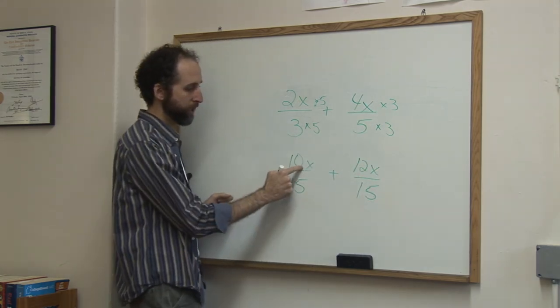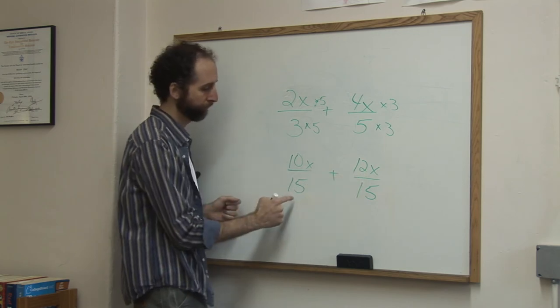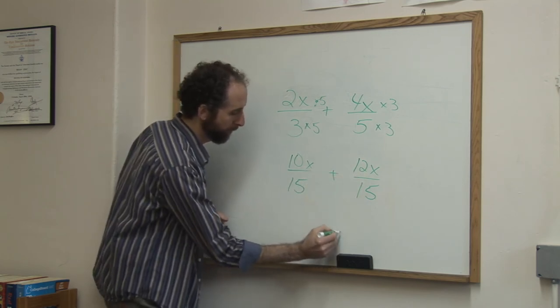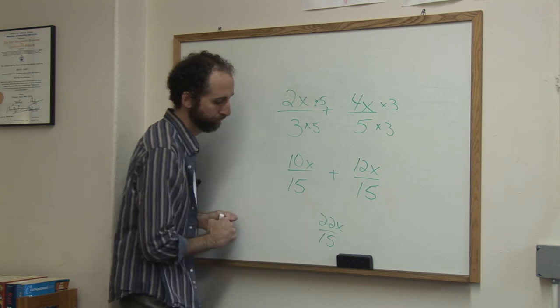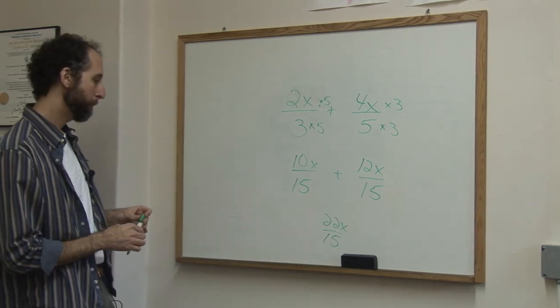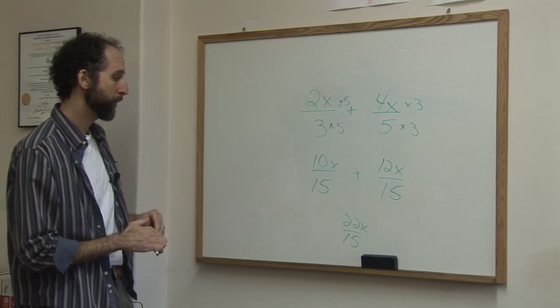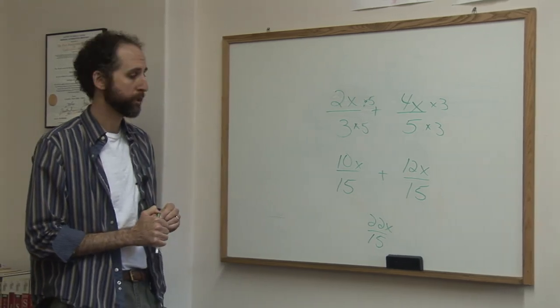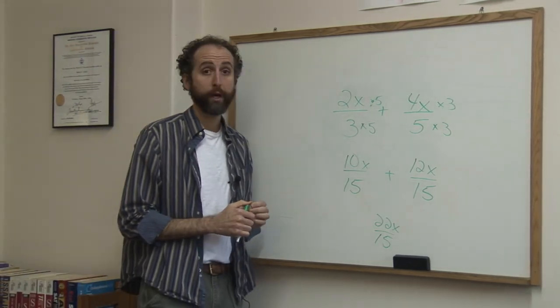And now we add 10x plus 12x over 15. 10x plus 12x is 22x, and that's our answer. And then, of course, you should always reduce the fraction if you can, but this one doesn't reduce. 22 and 15 don't have any common terms. So your final answer is 22x over 15.